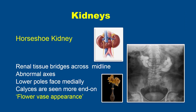The most common congenital anomaly of the kidney is the horseshoe kidney, in which the renal tissue bridges across the midline, the lower poles of the kidneys face medially, and there is renal tissue bridging the two sides together.